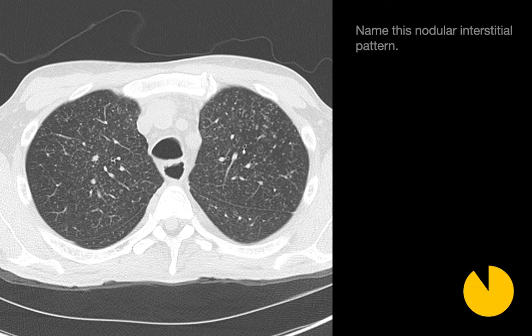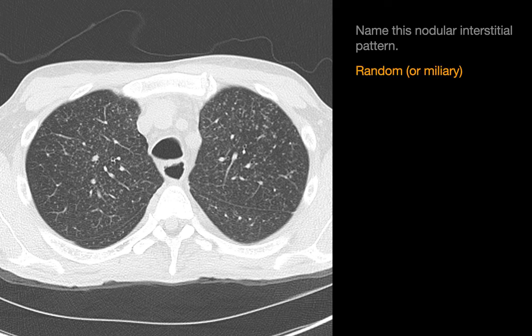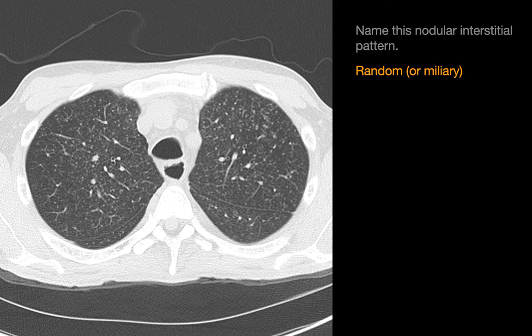Name the nodular interstitial pattern on this image. The pattern we're looking for here is a random or miliary pattern. The features of a random or miliary nodular interstitial pattern are lots of tiny micronodules that are of relatively uniform size.